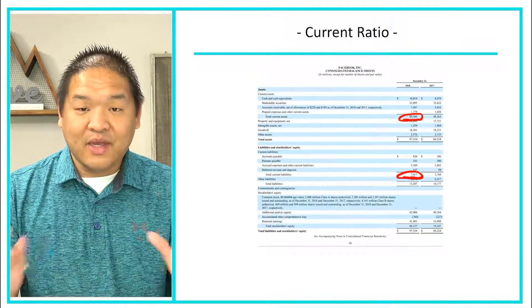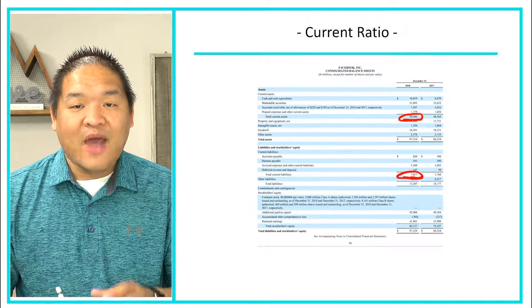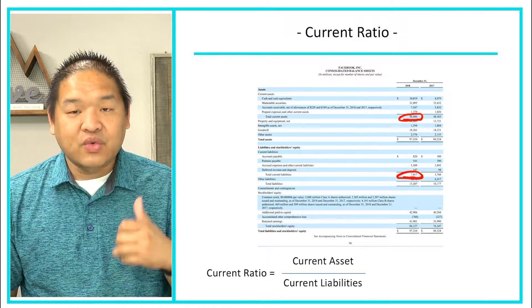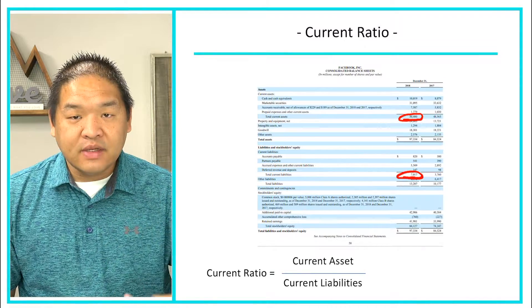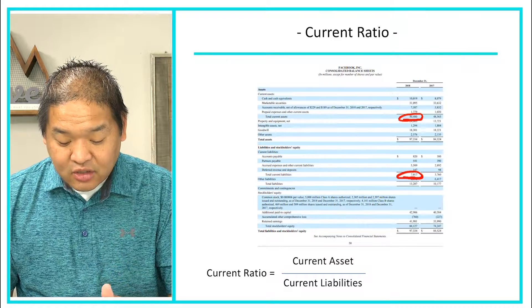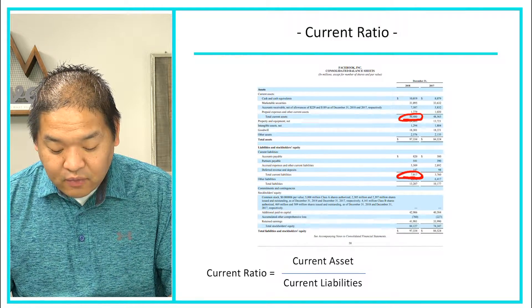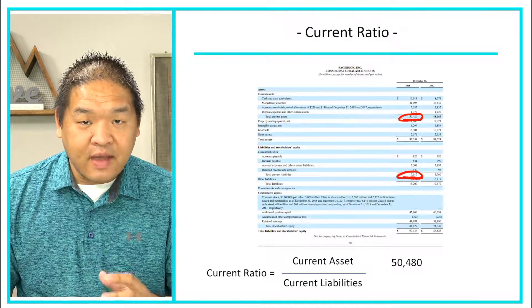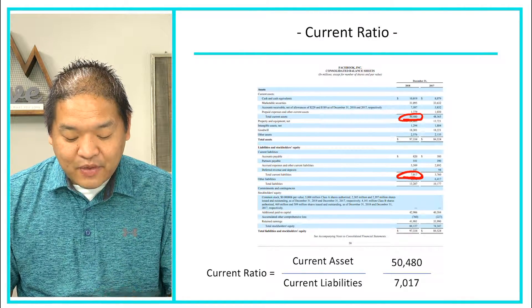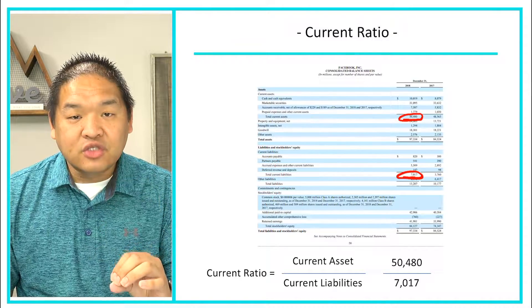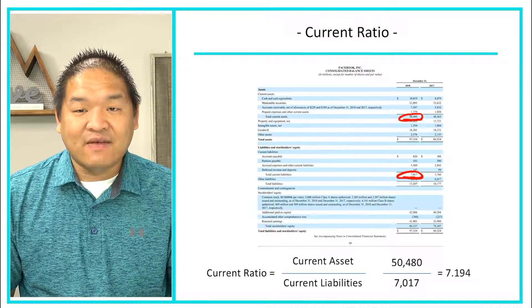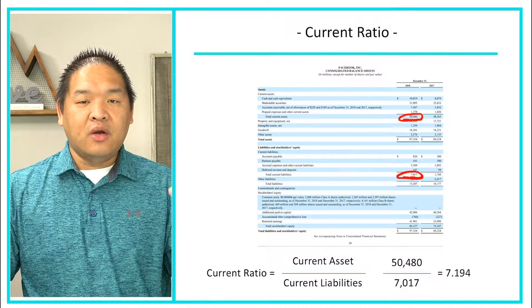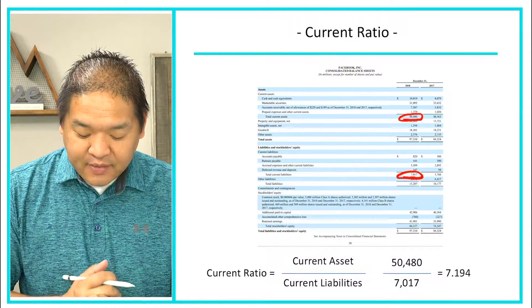And then we're looking for our current liabilities. Current liabilities here is $7 billion 17 million. Big numbers. So we've got those two numbers. Let's look at our current ratio equation. We have current assets over current liabilities. What is our current assets? $50 billion 480 million. We're going to divide that by Facebook's current liabilities, $7 billion 17 million. If we divide those two, we get something that looks like 7.19, obviously way better than 1.0, so they're doing really good.